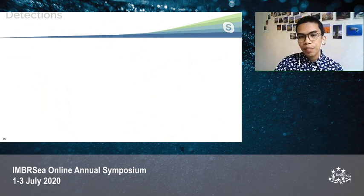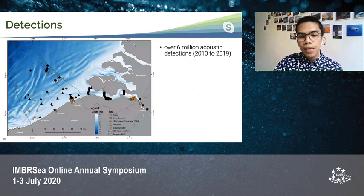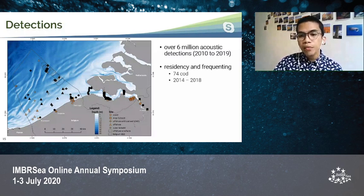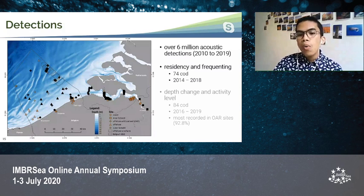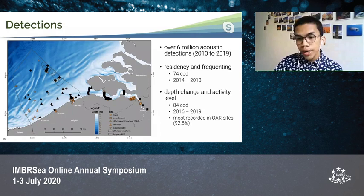Here are the results. For the detections, there were over six million acoustic detections from 2010 to 2019. In this graph, receivers that detected cod are indicated in black, while those that didn't are in orange. 74 cod were used in analyzing residency and frequenting, while 84 cod were used in analyzing depth change and activity level. Most of the depth recordings were from offshore artificial reef sites.